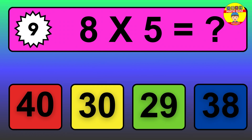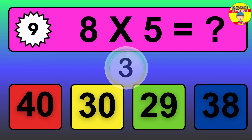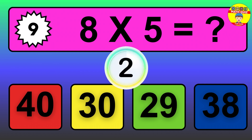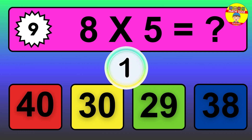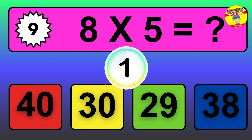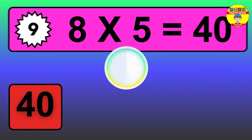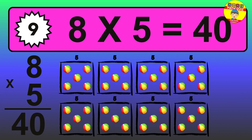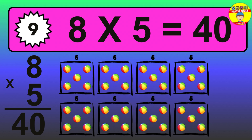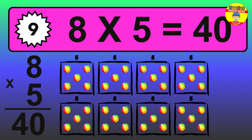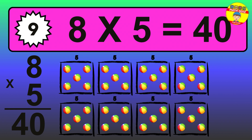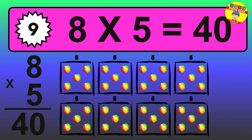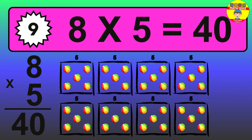Question 9. 8 times 5 equals what? The answer is 8 times 5 is 40. To calculate, we have 8 groups with 5 balls each one. So, how many balls do we have? 40 balls.